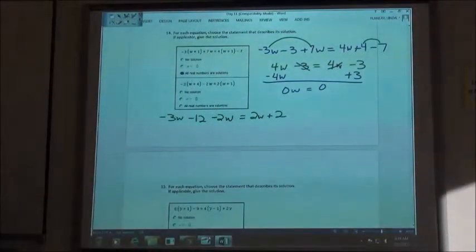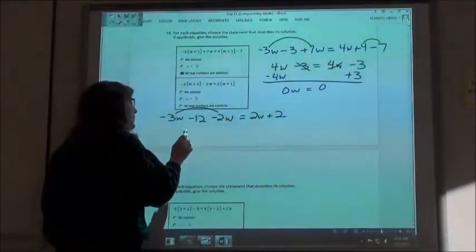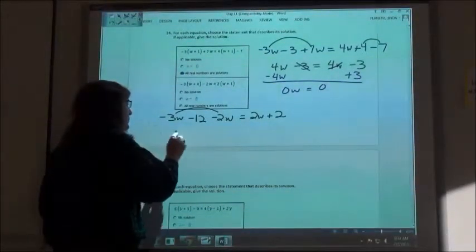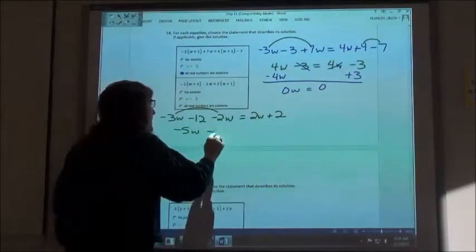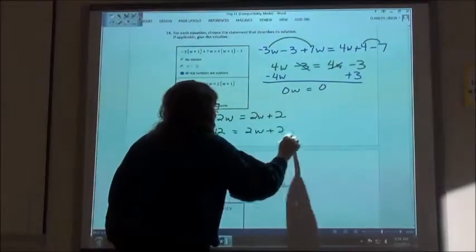So then we're doing the 3w and the minus 2w. Negative 3w plus minus 2w is going to be minus 5w. Minus 12 equals 2w plus 2.